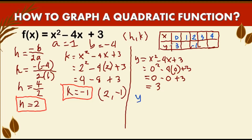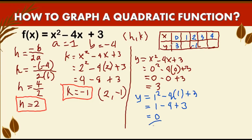Next, we will change x to 1. So we have 1 squared minus 4 times 1 plus 3. That gives 1 minus 4 is negative 3, plus 3 is equal to 0, so y equals 0. Now we can use the reflection — this is our vertex, so whatever answers are on the left are the same on the right. When x is 3, y is 0. When x is 4, y is 3.